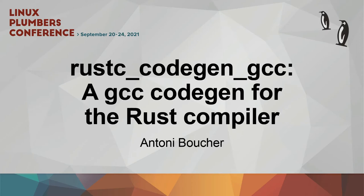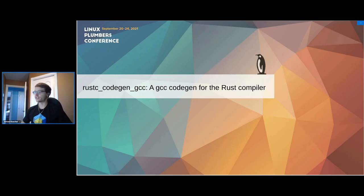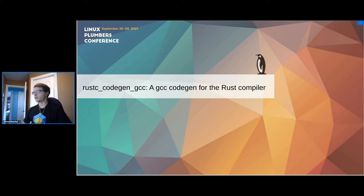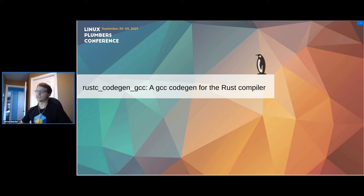Today I'm going to introduce you to rustc_codegen_gcc, which is a GCC codegen for the Rust compiler. This talk will present the progress of this project: what is already implemented, what still needs to be done, what we could improve on both the GCC side and the Rust side, and finally we'll talk about potential issues we might encounter for different use cases.